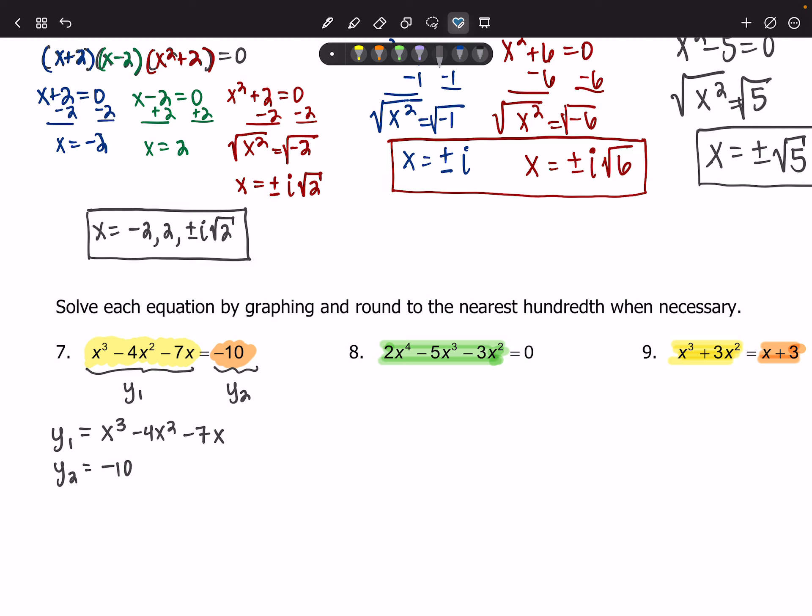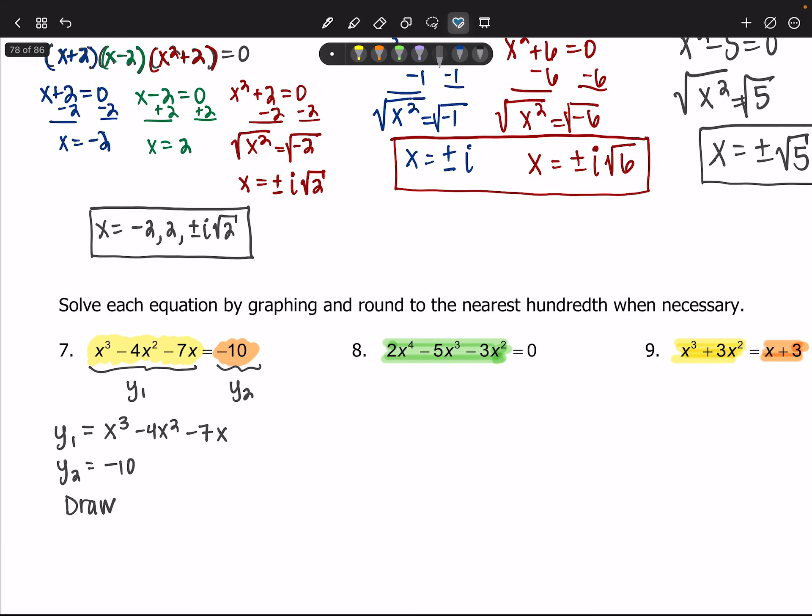You're going to graph or draw that, and then you will hit F5 for G-Solve, and then you will choose Intersect, which I believe is F5 Intersect. And the answers are the x values of each intersection point.